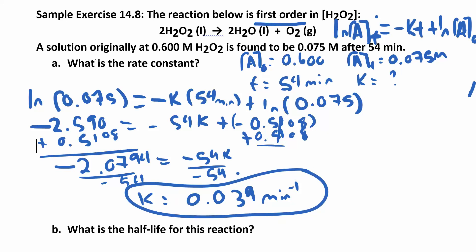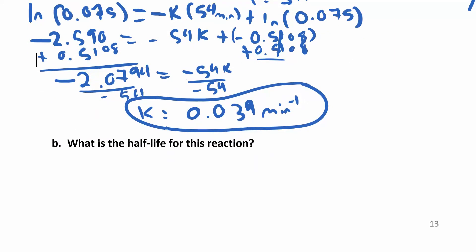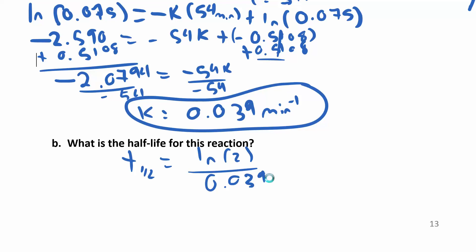Once you know k, you can find the half-life. t½ = ln(2)/k = 0.693/0.039 min⁻¹. The answer will be in minutes, and you end up with about 18 minutes as your half-life.